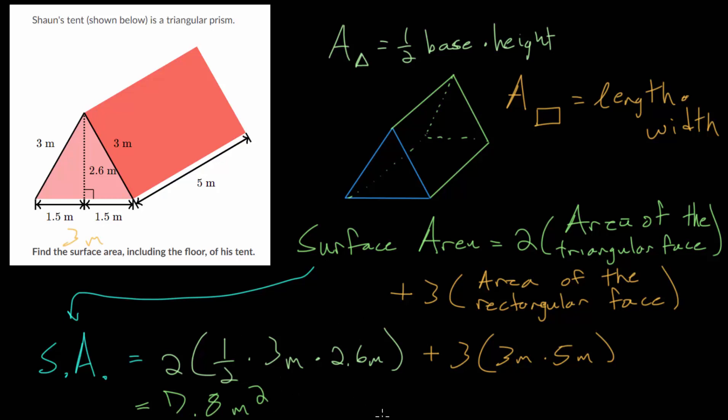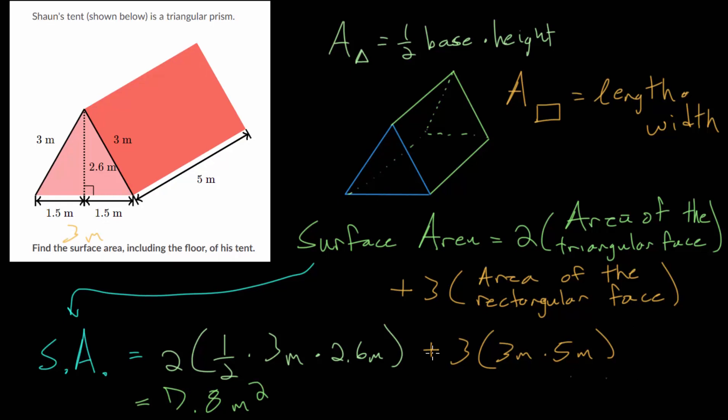And of course, you can just do that in a calculator if you want to double check. And then we do 3 times 5, that's 15. And we have to triple that. So that will be 45 square meters.